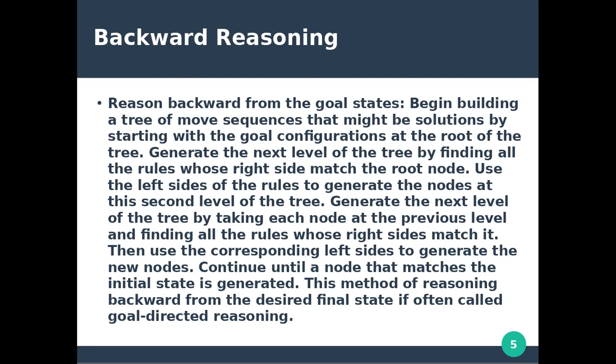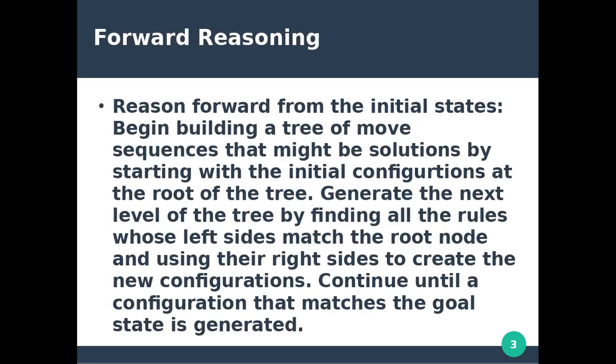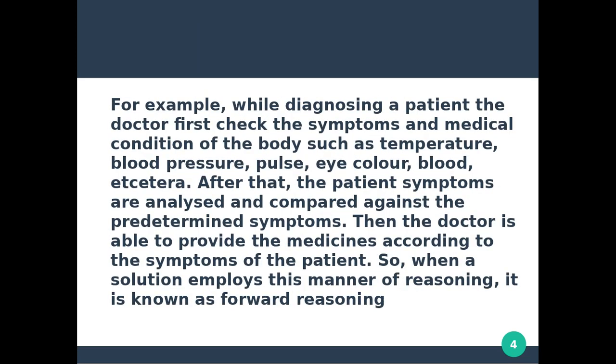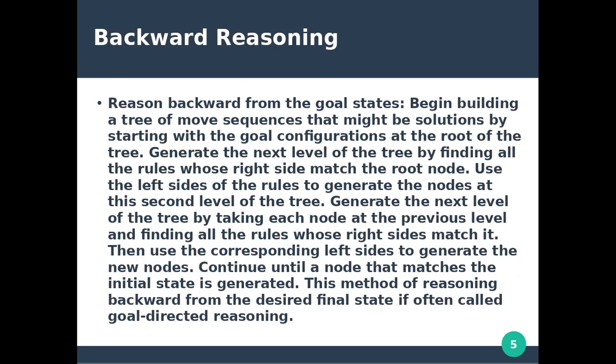In forward reasoning, we reason forward from the initial state. In backward reasoning, we reason backward from the goal state. We begin building a tree of move sequences that might be solutions by starting with the goal configuration at the root of the tree.